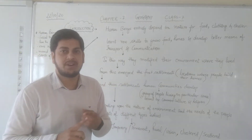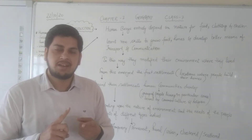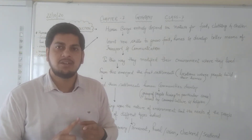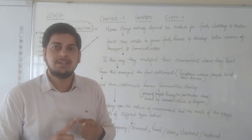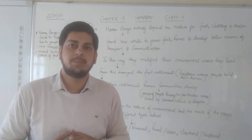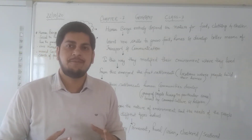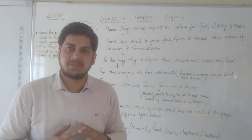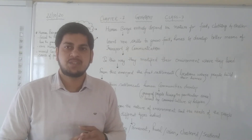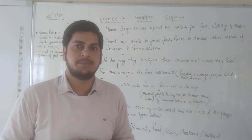These were temporary, permanent, clustered, scattered, rural and urban. In this particular chapter we will be discussing about the different patterns of settlements and transport and communication in detail.